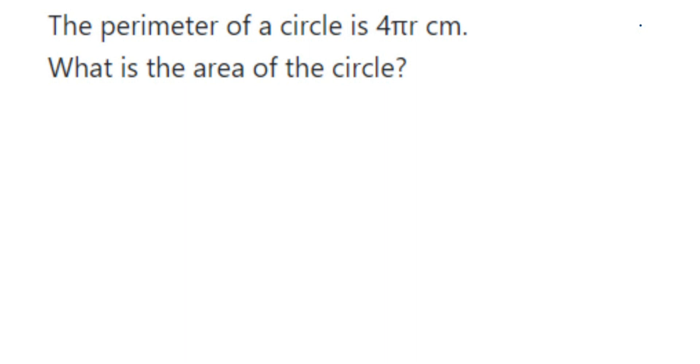Hey everyone, here's a question on circles and this is a really interesting question. The question is: the perimeter of a circle is 4πr centimeters. What is the area of the circle? Now here they have not given the number, instead they have given 4πr centimeters, that is the perimeter. Perimeter means circumference, so circumference of circle is given as 4πr centimeters. Using this we have to find out the area of circle.